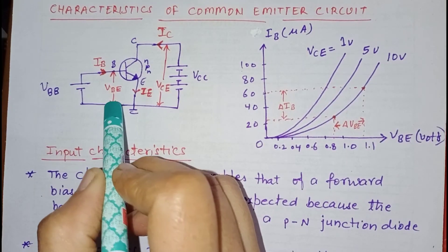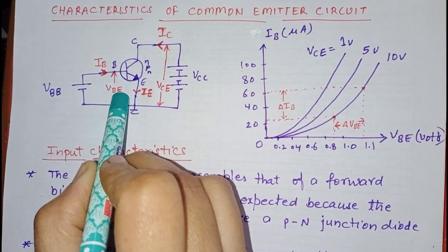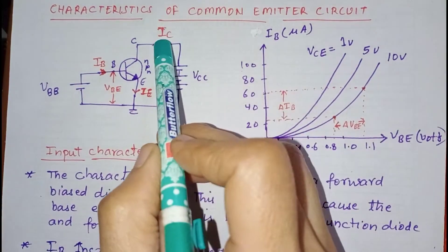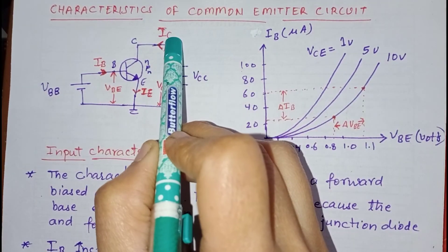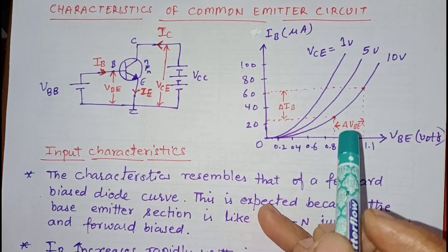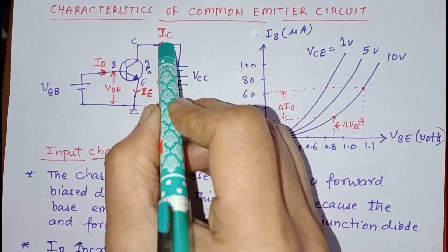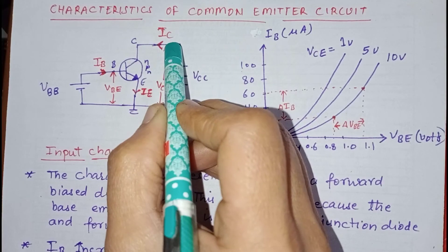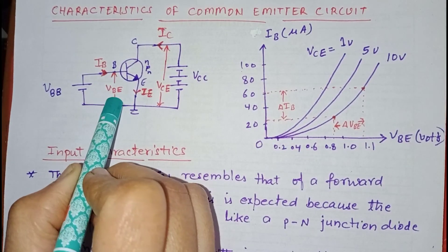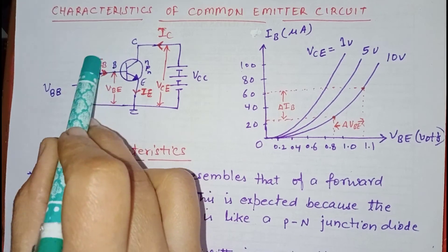Input characteristics are drawn between input voltage and input current at a fixed value of output voltage. To draw input characteristics, we fix the value of VCE output voltage, change the value of VBE in steps, and record the corresponding change in IB.